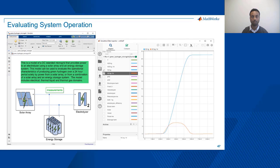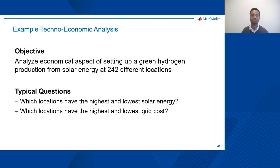Once the three main components are modeled and verified separately using simulation, we can start integrating them towards creating a complete system model. Once we have the system model we can run simulations to understand and evaluate the operational performance of the system. If you remember, I said our objective was to do a techno-economic analysis on setting up green hydrogen production from solar energy at 242 different locations.